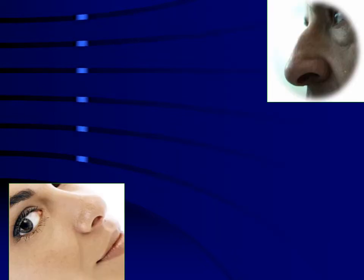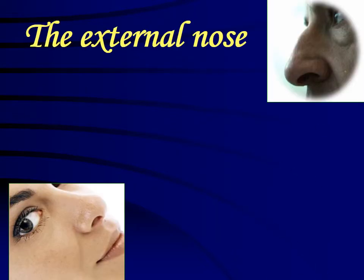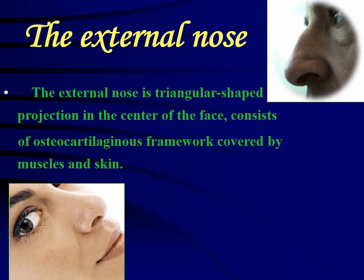Today's first topic is external nose. The external nose has a triangular shape — it is the obvious structure of the nose visible on the outside. It is triangular in shape and is in the form of a projection placed right at the center of the face. It is made up of bone and cartilage, which is why we call it an osteocartilaginous framework.